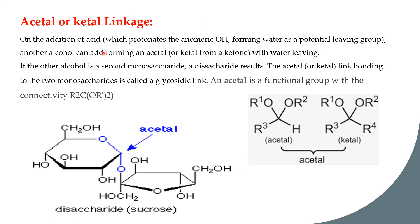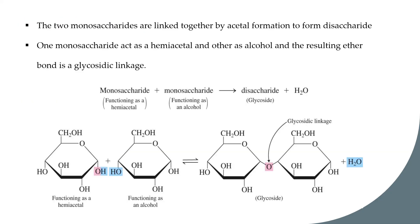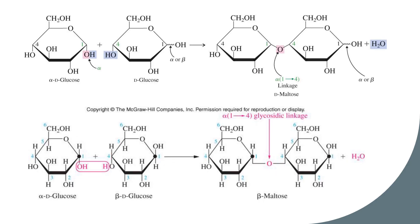On addition of acid, which protonates the anomeric OH forming water as a potential leaving group, another alcohol can add, forming an acetal with water leaving. If the other alcohol is from a second monosaccharide, the resulting linkage is called a glycosidic linkage. This is also a condensation reaction — water is released and the glycosidic linkage is formed between two monosaccharides.